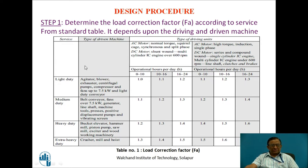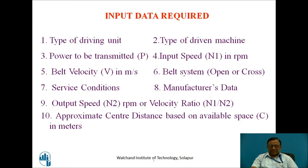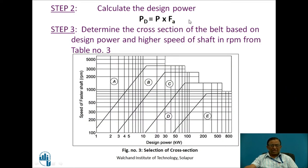The procedure involves determination of the load correction factor FA according to service conditions. The manufacturer's tested data covers certain service conditions, and practical applications differ in conditions, so to account for this deviation one has to consider the load correction factor. Here I have shown a table which includes such factors as standard data. For example, a centrifugal pump operating for 16 to 24 hours duty gives a factor of 1.2. The design power is then calculated as power to be transmitted multiplied by the correction factor for the load.